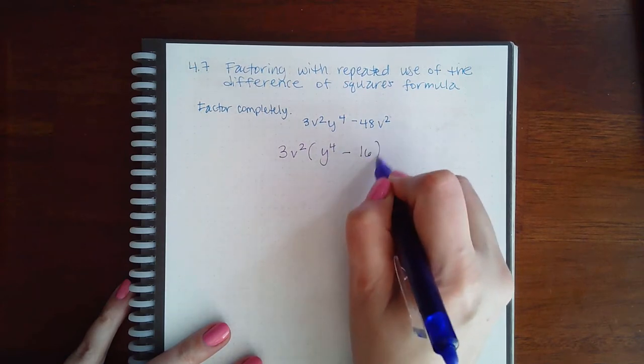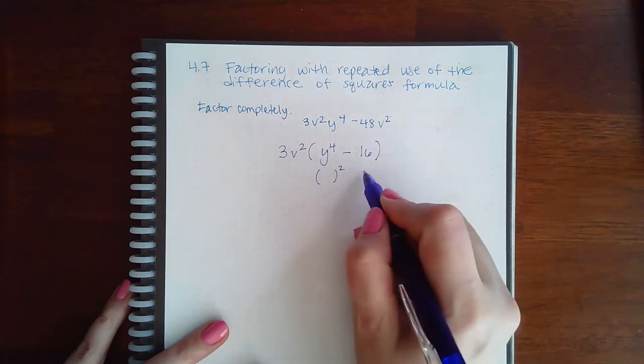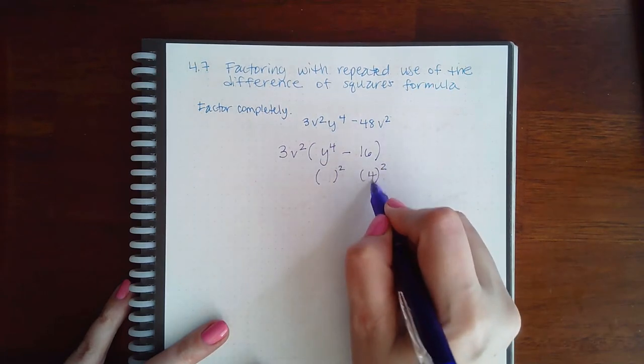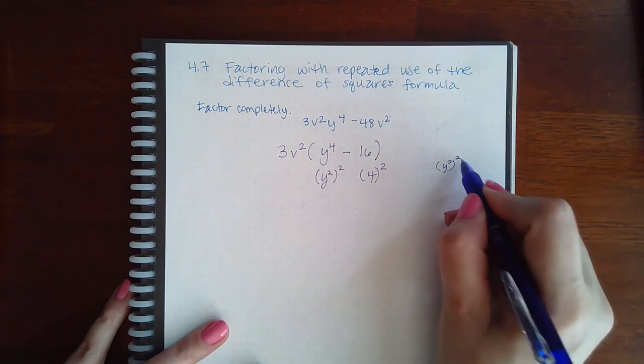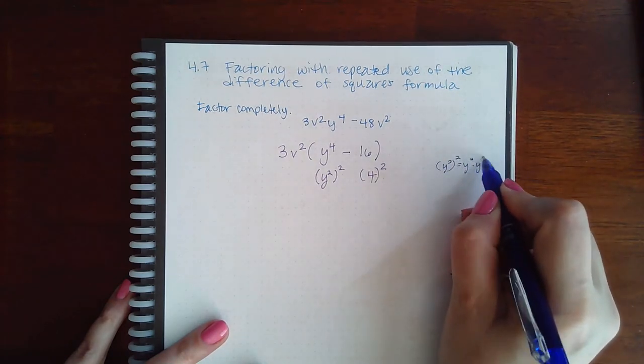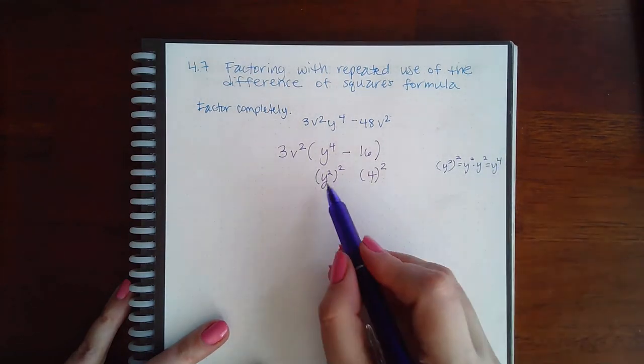Then if I use my, here this is 4 squared, this is actually y squared y squared. Y squared squared means y squared times y squared, which is y to the fourth. So that's what's being squared there.